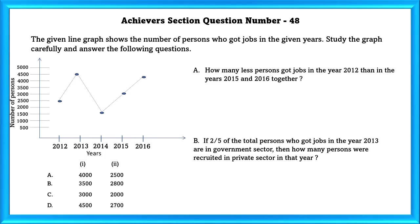First, we have to add the number of people who received their jobs in 2015 and 2016. That is 3,000 plus 4,000, that is 7,000.